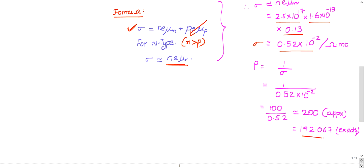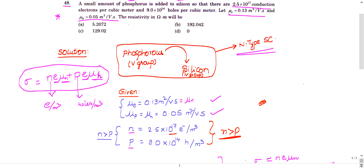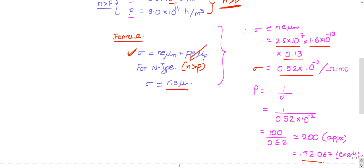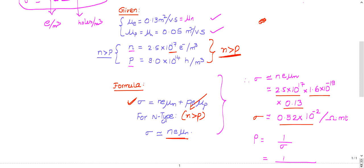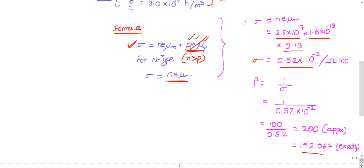If you do the reciprocal calculation, you'll get nearly 192 exactly. So option B is the right choice. Some people want to use the complete formula because hole information is also given.